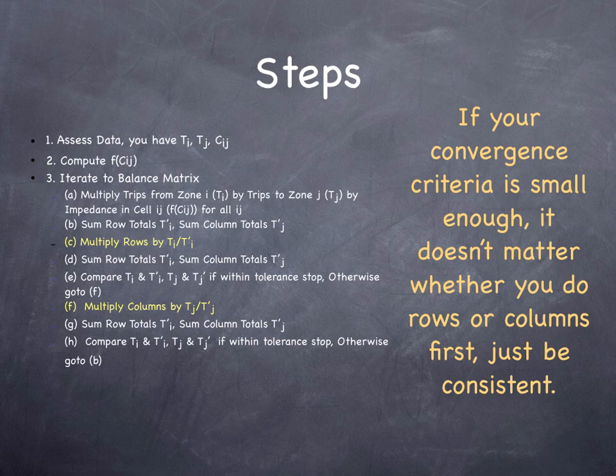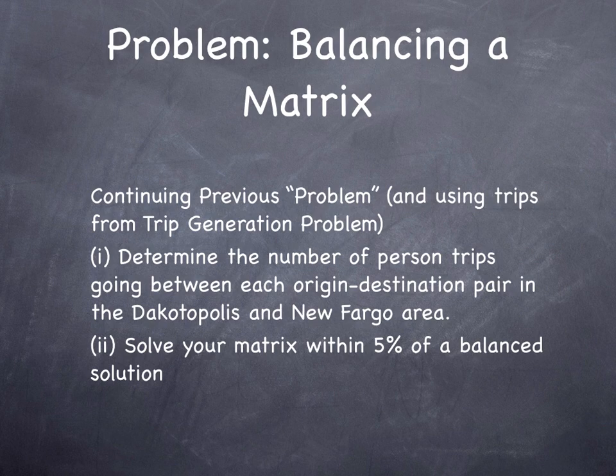And then we go back, and essentially, and the term is called raking, we rake the matrix to adjust the numbers to make sure that it matches. And then we do the same thing that we did row-wise. We do it column-wise to make sure that the number of destinations matches the columns, and we iterate this procedure until it converges to some close enough threshold so that each time we are doing it, we are getting very small changes between the origin and destination.